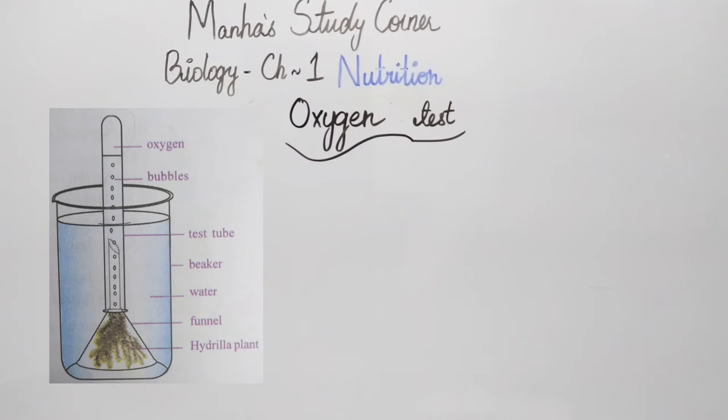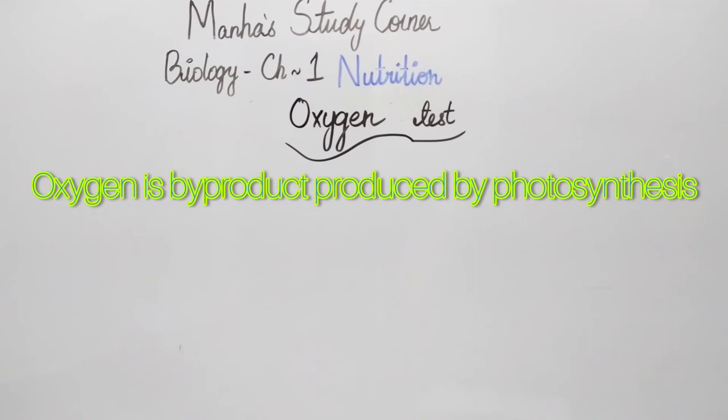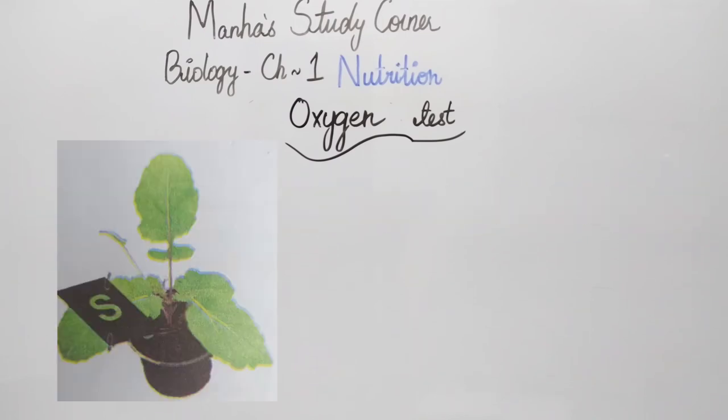When we test it this way, we will see that the splinter will burst into a flame, indicating that it is indeed oxygen. So with this, we can conclude that oxygen is the byproduct produced by photosynthesis.